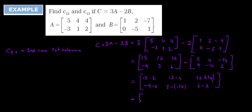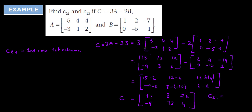Working out the subtraction: 15−2=13, 12−4=8, 12−(−14)=12+14=26, −9−0=−9, 3−(−10)=3+10=13, and 6−2=4. So C = 3A − 2B = [13, 8, 26 / −9, 13, 4]. Now, C₂₁ is the second row, first column entry: C₂₁ = −9. And C₁₃ is the first row, third column entry: C₁₃ = 26. That is the end of our video.